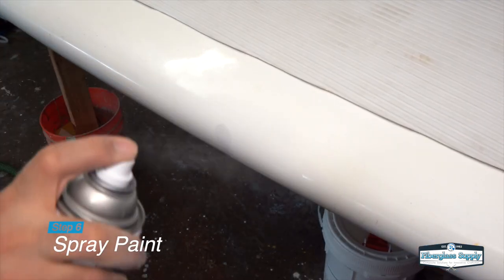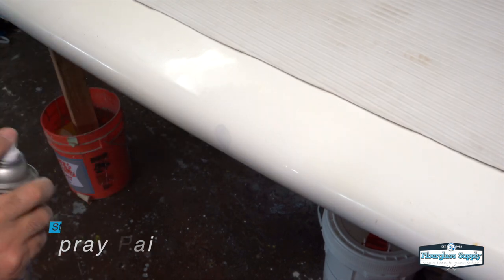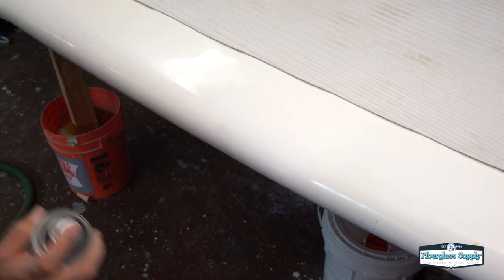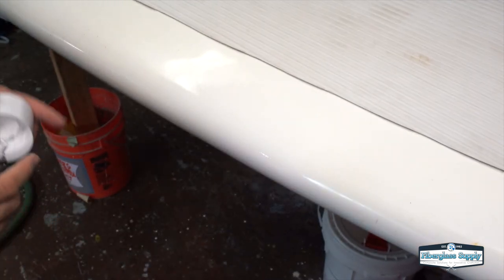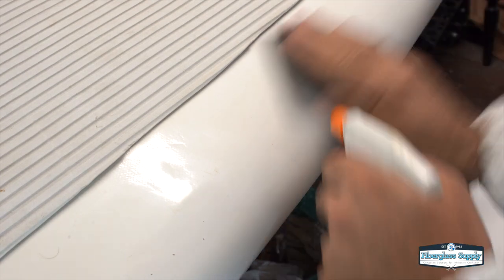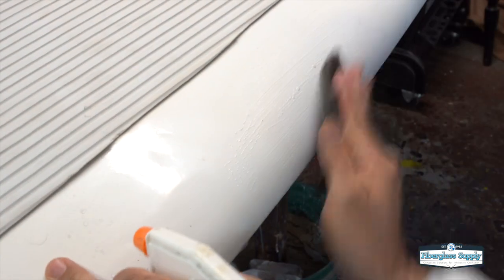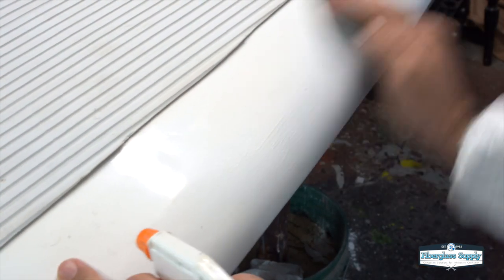After we've sanded it out to 220, the next step, which is step six, is to spray paint. And we're using just a white spray paint from the hardware store here. Typically, we end up applying about two to three coats. And if you have to, you can sand it with 220 between coats.